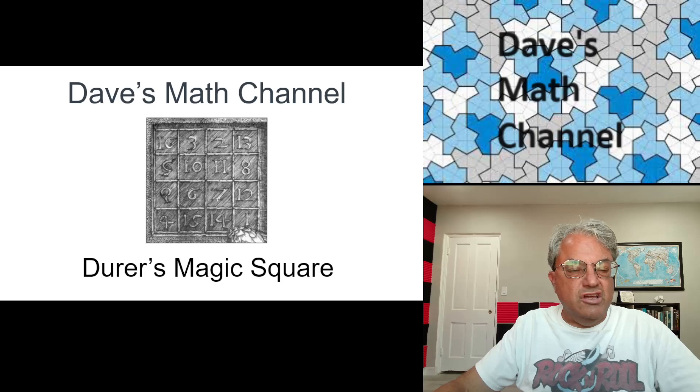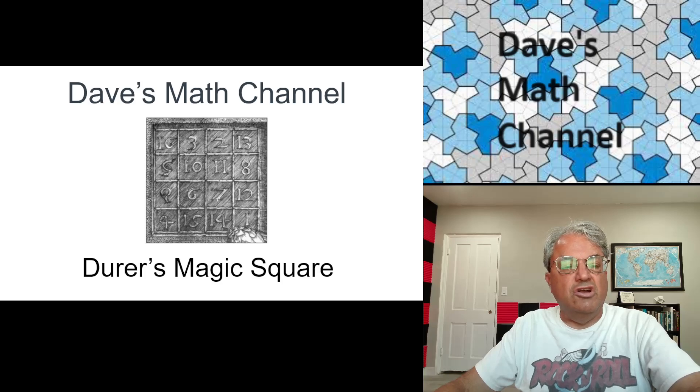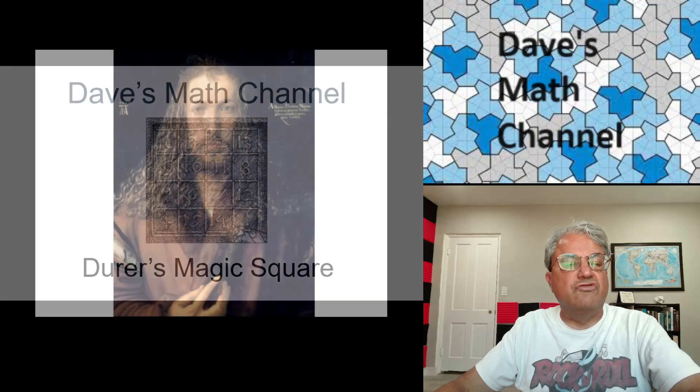But yeah, there's already a lot of Order 4 Magic Squares, but there's one that really stands out I think and it's known as Durr's Square or Durr's Magic Square. So that's what I'm going to talk about today. And here's a picture of it. This is an insert from, I'll get to this later, but this is an insert from one of his paintings.